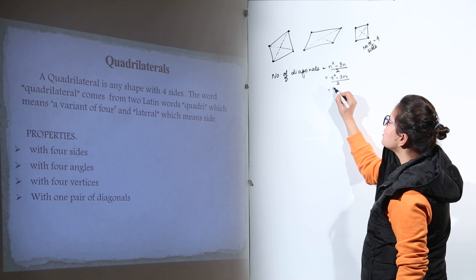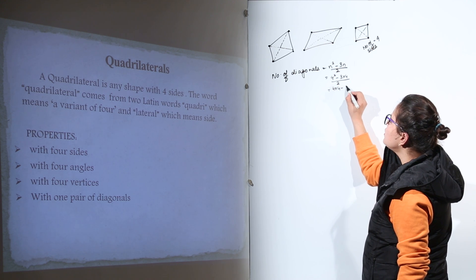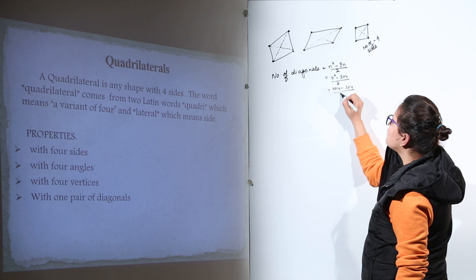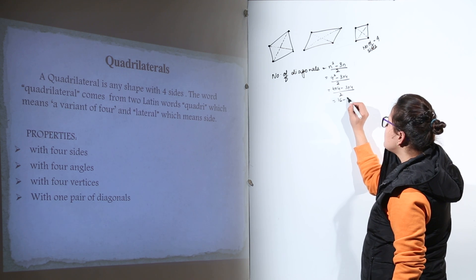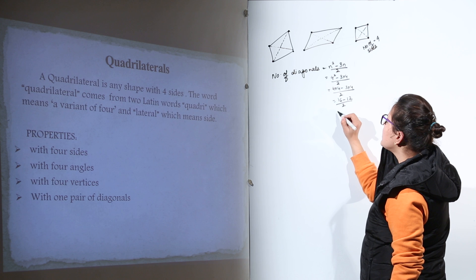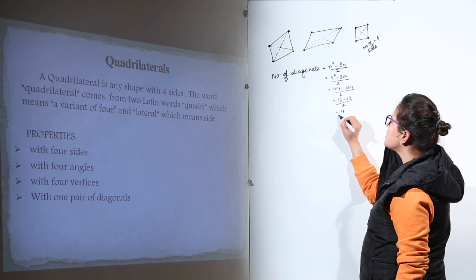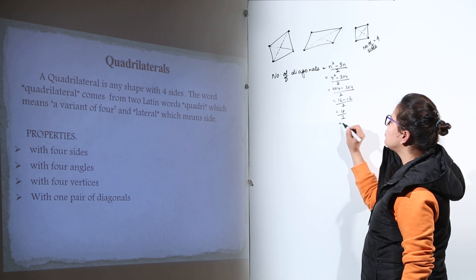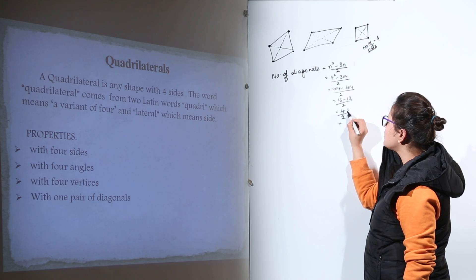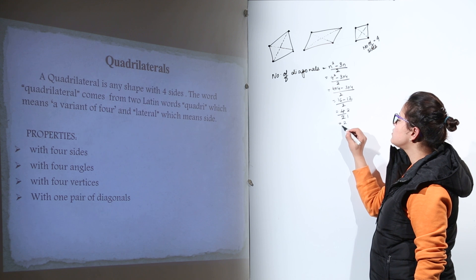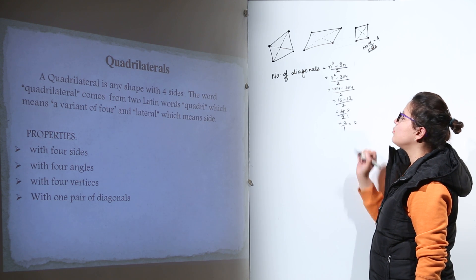What is 4 squared? 4 squared is 4 times 4, which is 16, and 3 times 4 is 12, divided by 2. 16 minus 12 is 4, divided by 2. If you simplify this further, 4 divided by 2 equals 2.